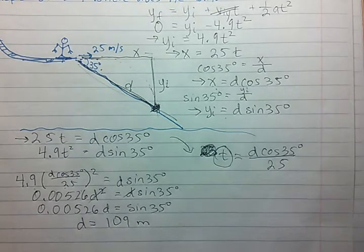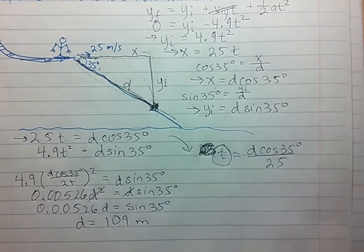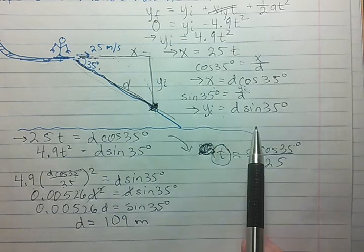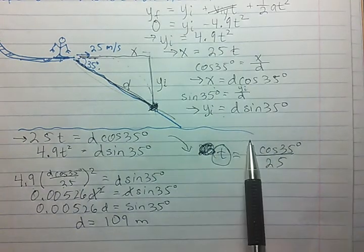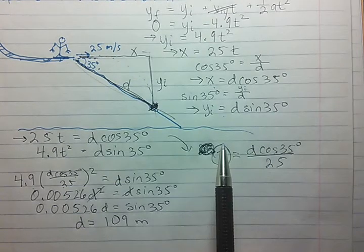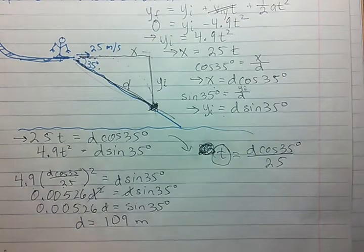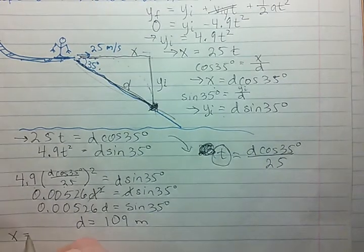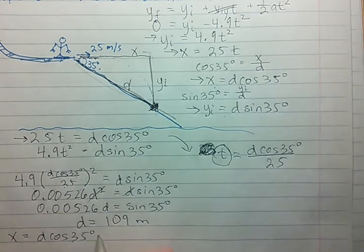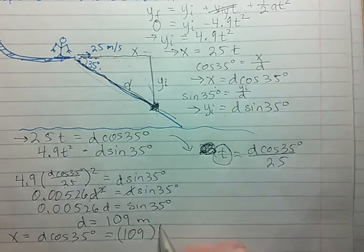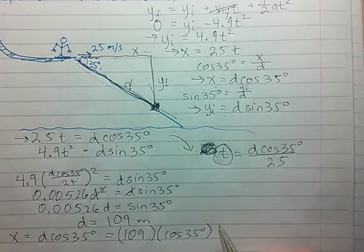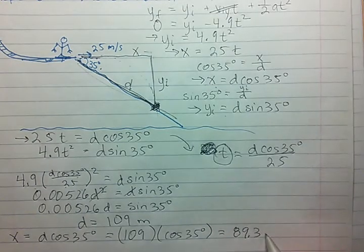Okay, the problem gets easier from here. We have this equation and this equation. If we simply put 109 in for d, then we can figure out how far the skier has gone in the x direction and how far the skier has gone in the y direction. So x equals d cosine 35. Plug in that 109 and we get 89.3 meters.